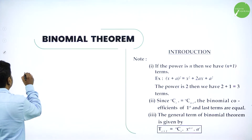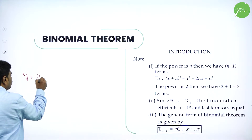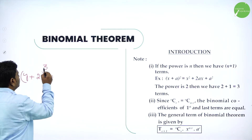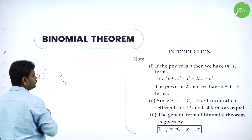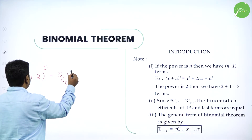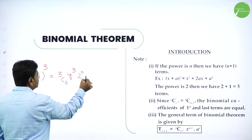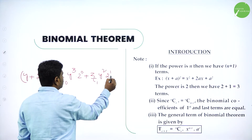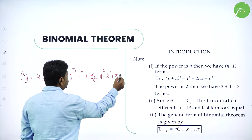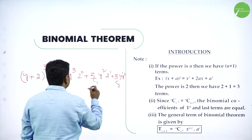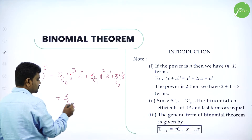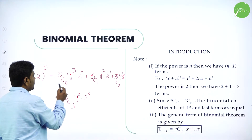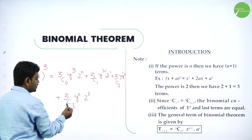To make you understand better, I'll take y plus 2 whole power 3. It's a binomial expression with power 3. Start with 3C0: first term power 3, second term power 0. Then 3C1: first term power decreases from 3 to 2, second term power 1. Then 3C2: first term y power 1, second term 2 square. Last term 3C3: first term becomes y power 0, second term 2 power 3.